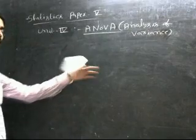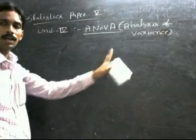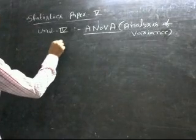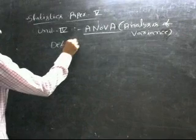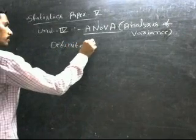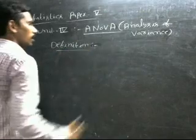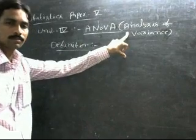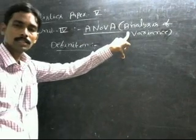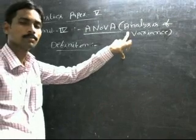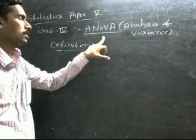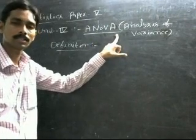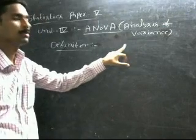Analysis of variance means we are analyzing the variations or differences. ANOVA — analysis of variance — is a powerful statistical tool which is used for measuring the significant differences between more than 2 samples. In other words, by using the analysis of variance method, we are measuring the significant differences between more than 2 sample means.